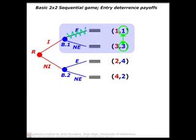And so why wouldn't we expect the top branch to be played? Because if the blue player gets to node B1, and if they did decide to enter, they would get their worst outcome. Why would they do that? It wouldn't be a rational thing to do, right?